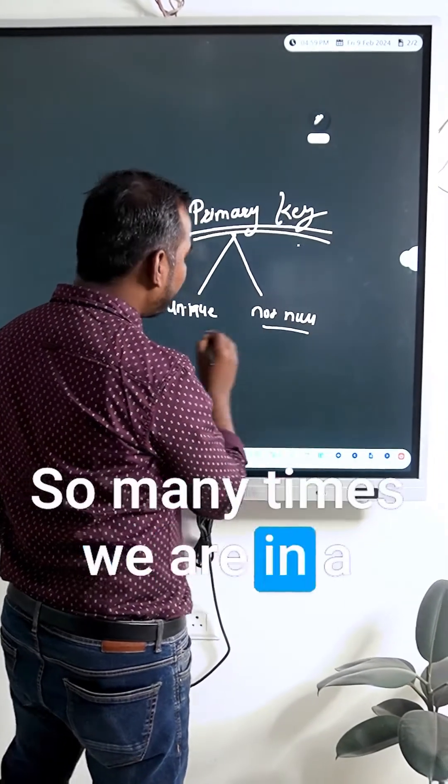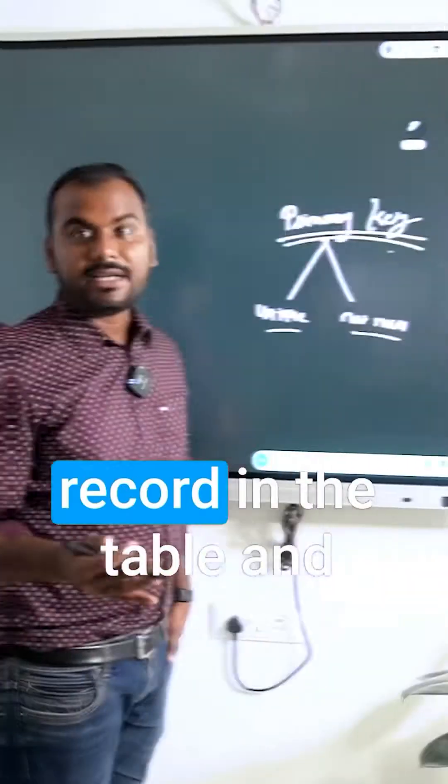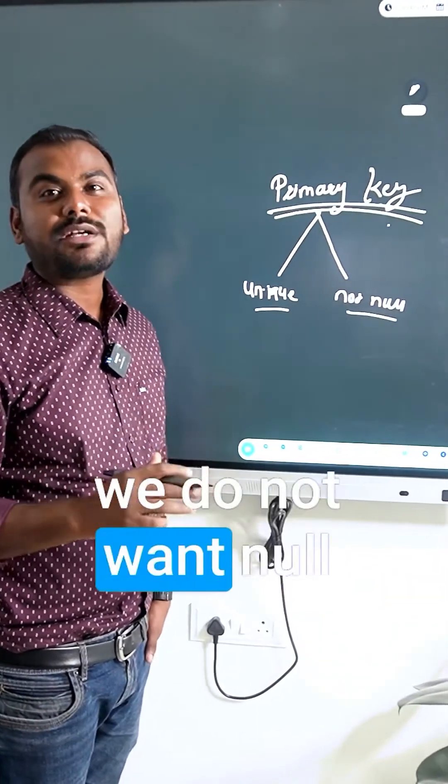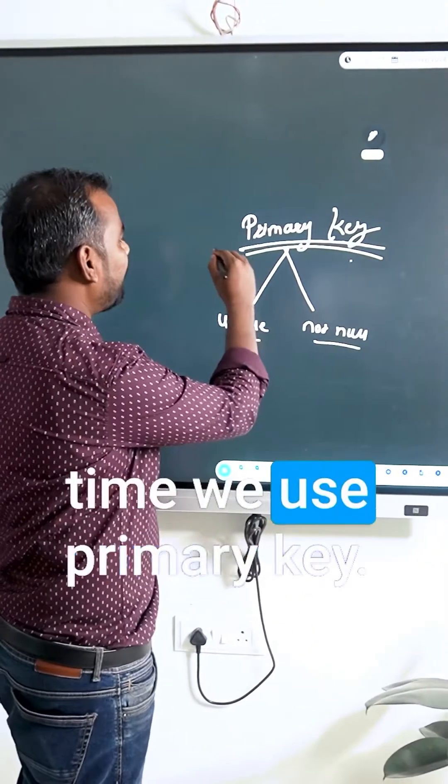Many times we are in situations where we don't want duplicate records in the table and we do not want null values for that column. That's when we use a primary key.